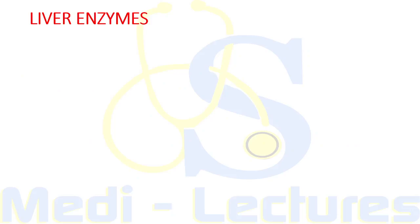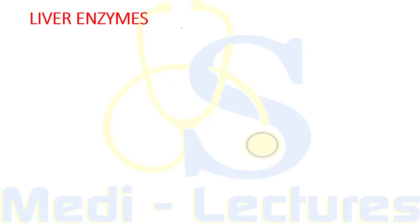The liver contains thousands of enzymes, some of which can be used to assess liver function. Increased serum levels of a liver enzyme indicate increased entry from damaged liver cells. These enzymes are grouped into two categories: those whose elevation reflects hepatocyte damage, and those whose elevation reflects cholestasis.